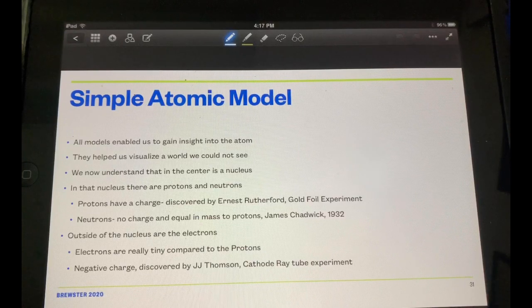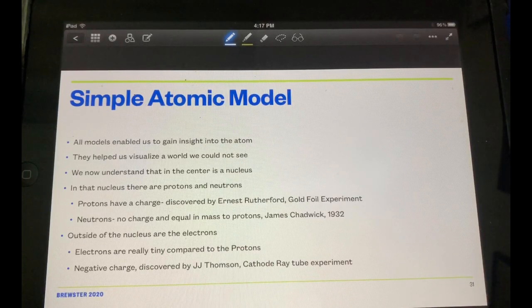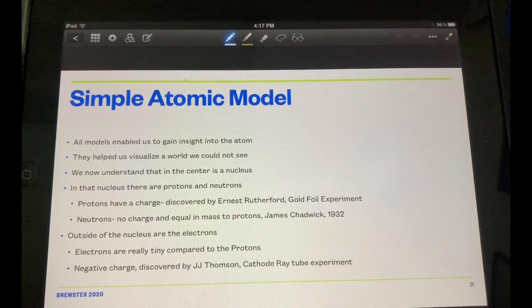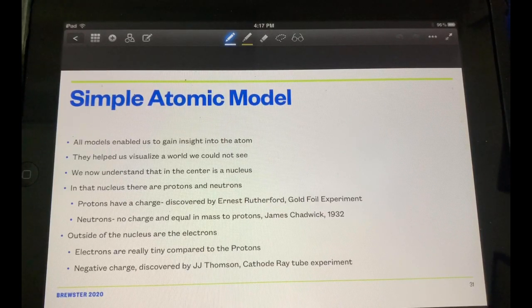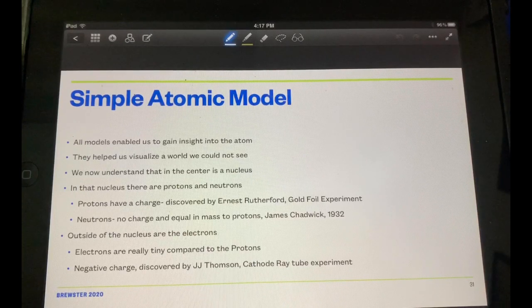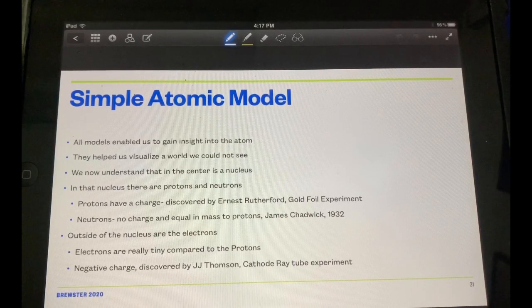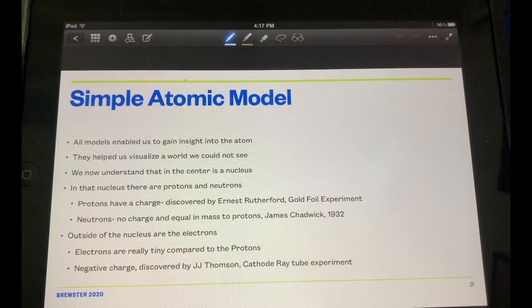Outside the nucleus are the electrons. Electrons are really tiny compared to the protons so they don't actually add much mass at all. And that's why the AMU is derived from the protons and the neutrons. Negative charge discovered by J.J. Thompson in the cathode ray tube experiment. He's the first one who got us started on this.